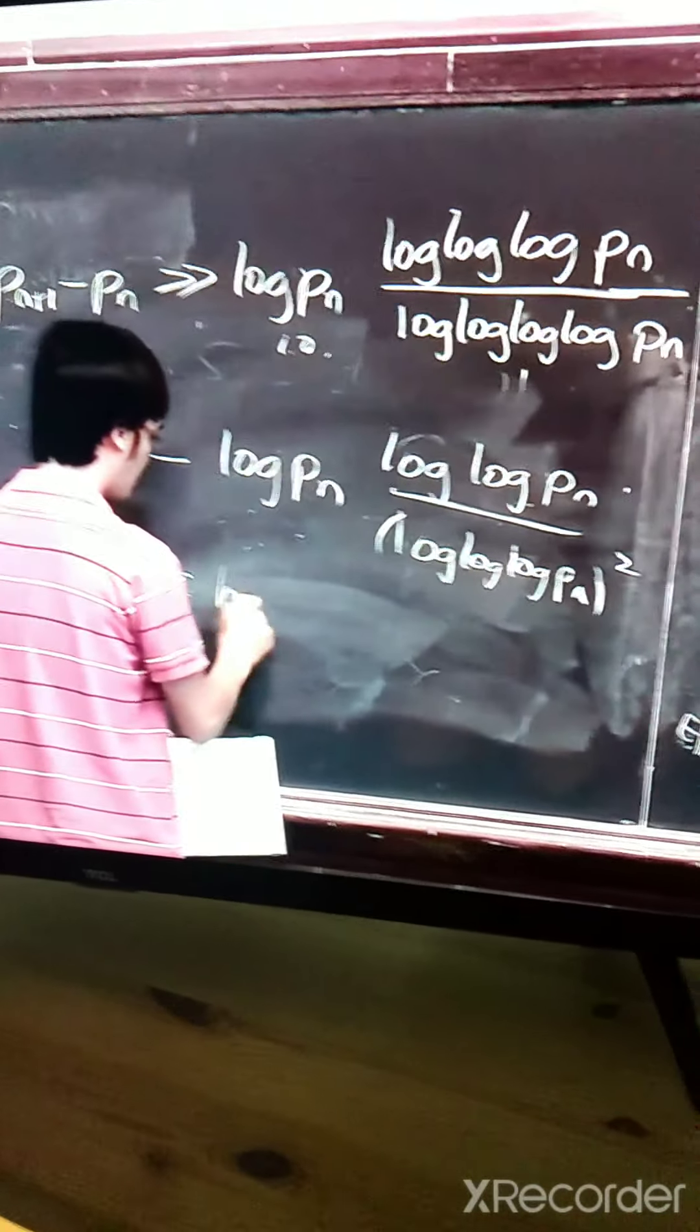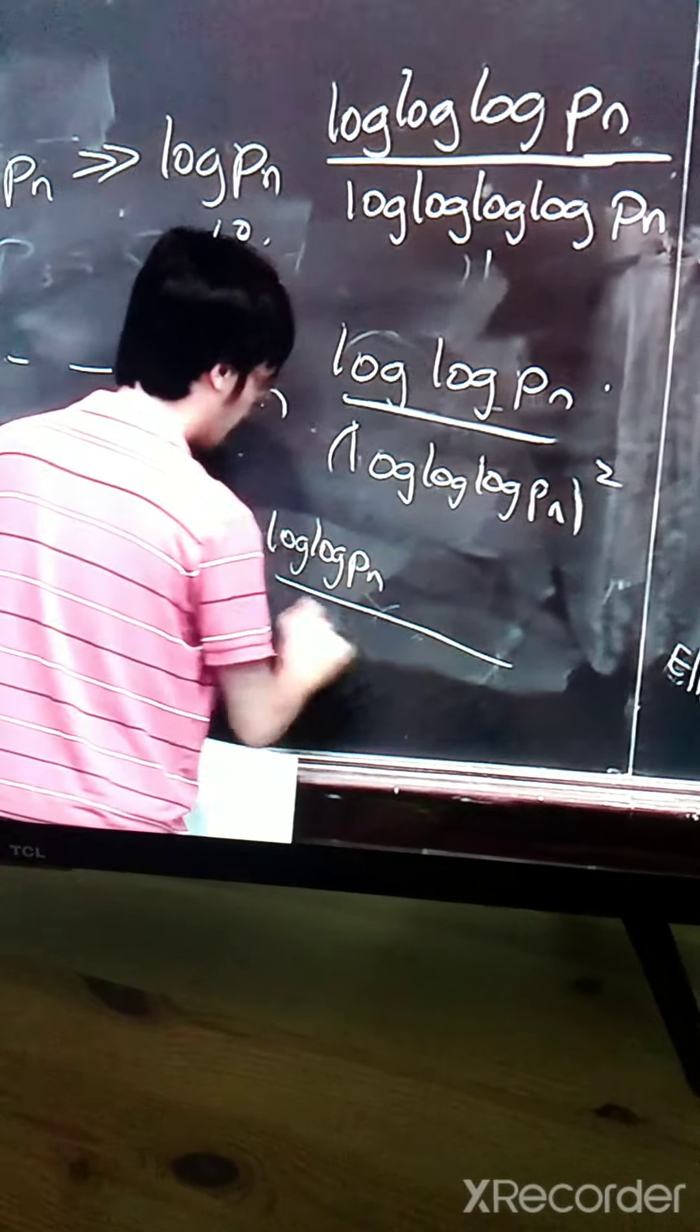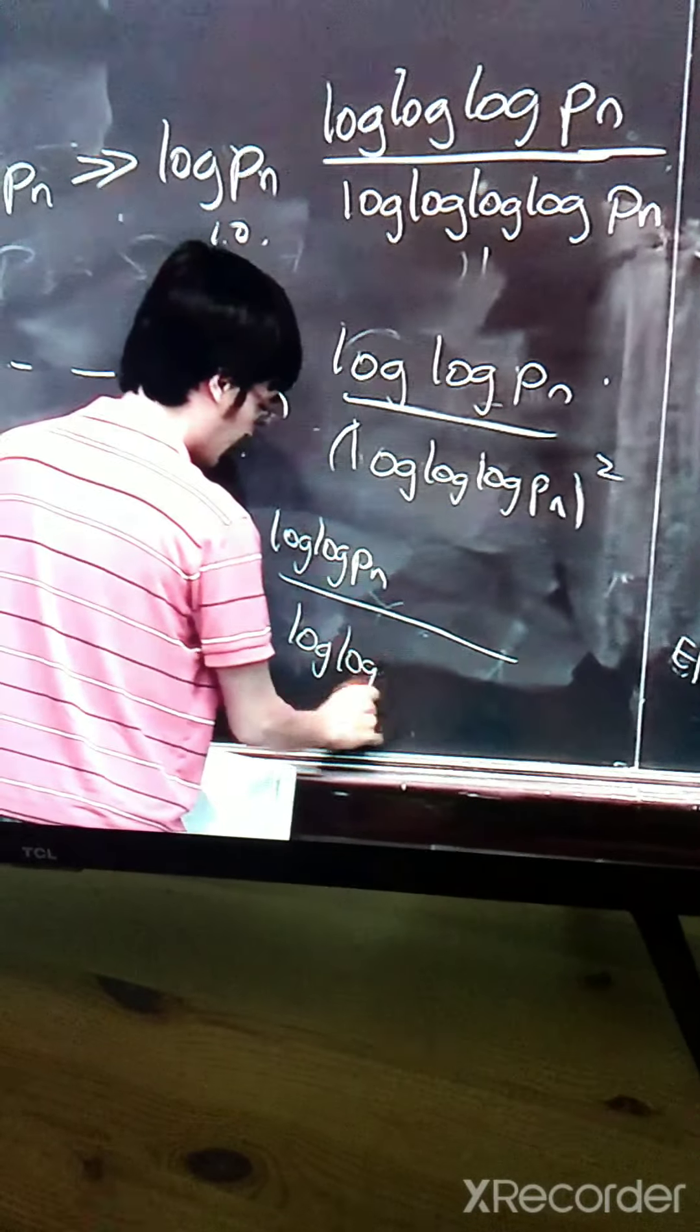As a constant times log Pn. Again, two logs over three logs squared. Same bound.